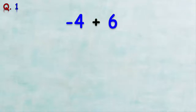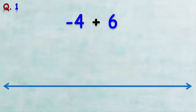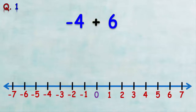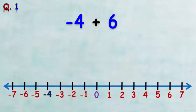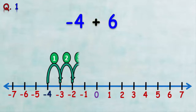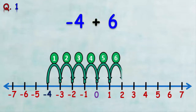Now follow me to find the sum of negative 4 and 6. We draw the number line with negative and positive numbers. We start at negative 4 on the number line, then we make six forward jumps: one, two, three, four, five, six. Now we get number two, so negative four plus six equals two.